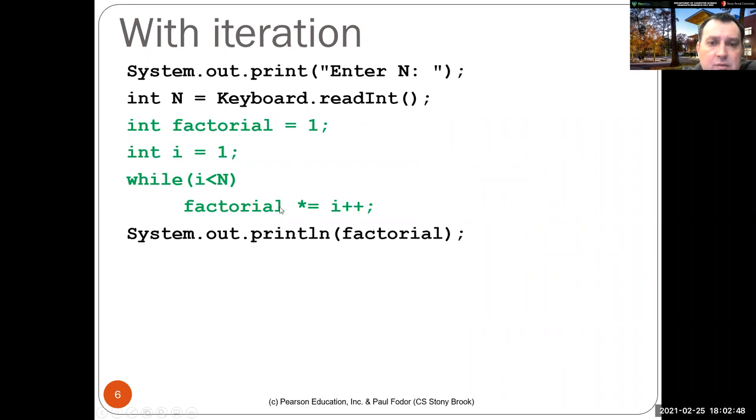We define i is equal with 1, while i is less than N, the value that was read, the factorial, the old factorial product is multiplied with i and we post increment i with 1. So it starts 1 multiplied with 1, 2 multiplied with 1, 3 multiplied with 2 because basically it adds every number i to the same product factorial.